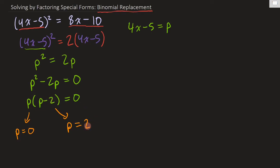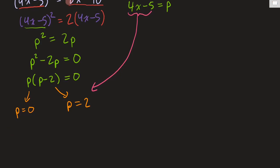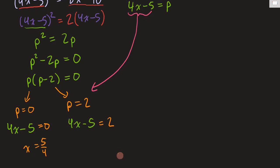Remember the negative 2 becomes positive 2 when it comes to the other side. Now what we need to do is take our 4x - 5 and substitute it back in for p. So this gives us 4x - 5 = 0, and 4x - 5 = 2. For the first equation, the negative 5 moves to the other side to become positive, and we divide by the 4, so x = 5/4. For the second equation, the negative 5 becomes positive 5 on the other side, so 2 + 5 = 7, divided by the coefficient of 4.